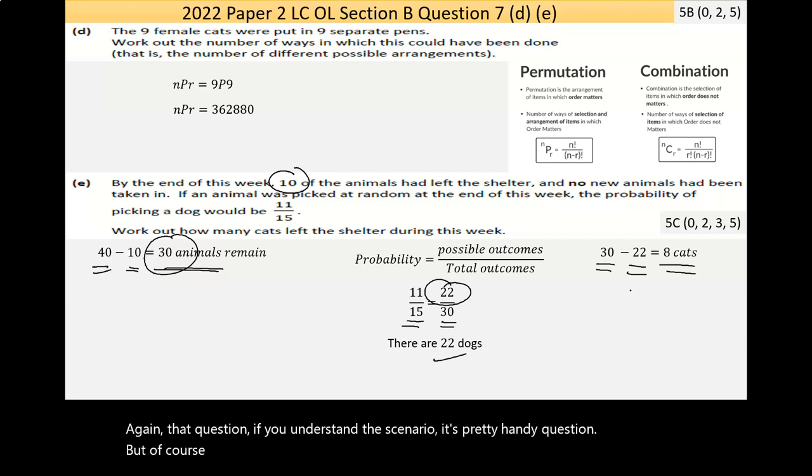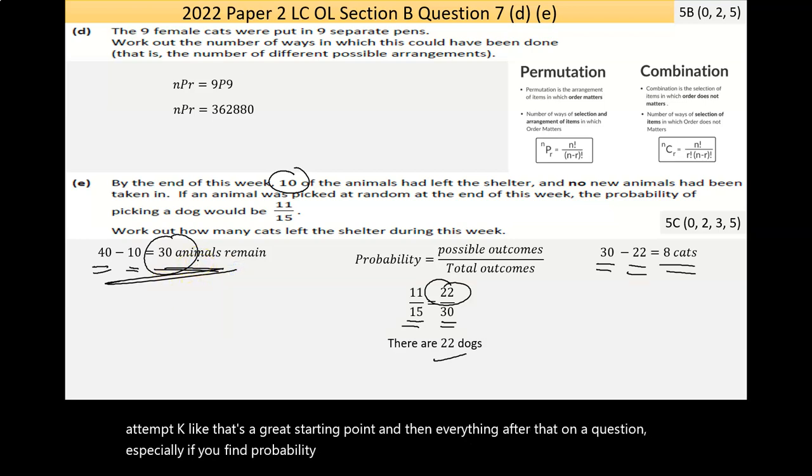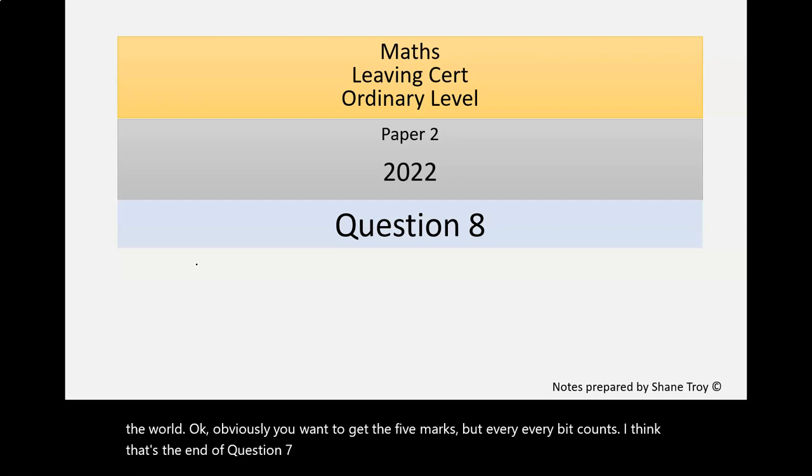Again, that question, if you understand the scenario, it's a pretty handy question. But, of course, understanding the scenario can be the trick. But, like I said there with getting the attempt, that's a great starting point. And then everything after that on a question, especially if you find probability tricky, like I do, you know what, that's not the worst return in the world. Obviously, you want to get the five marks, but every bit counts. I think that's the end of question seven. So, as always, if you want to copy the notes I'm working off, just send me an email at shanetroy at gmail.com and please like and subscribe to get access to more playlists. See you on question eight.